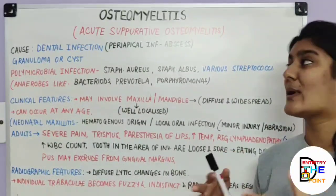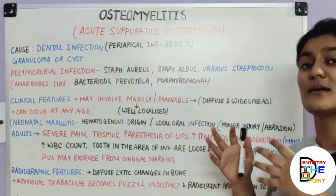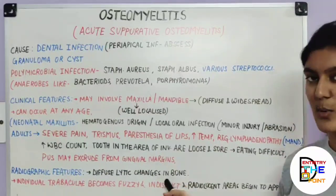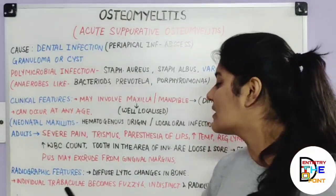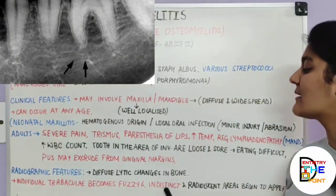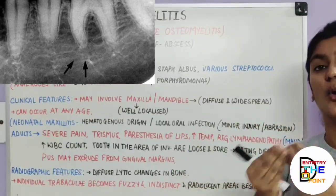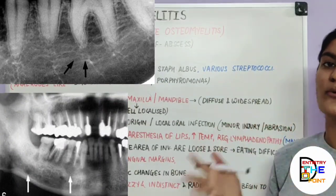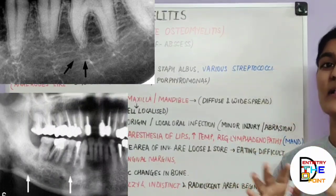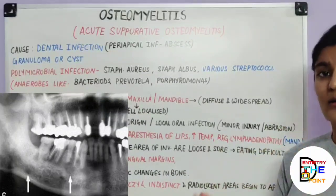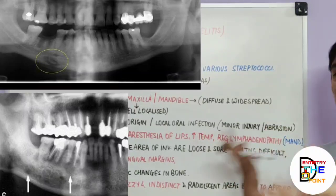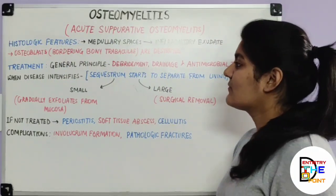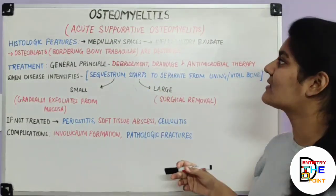Regarding radiographic features: these are not evident at initial occurrence. After one to two weeks, diffuse lytic or destructive changes in the bone become more evident. Individual trabeculae become fuzzy and indistinct — normally appearing radio-opaque on radiographs, they become blurred as they fill with pus. Their margins become unclear and radiolucent areas begin to appear where they were previously radio-opaque.